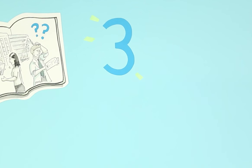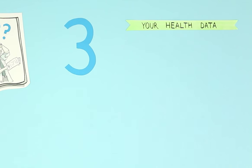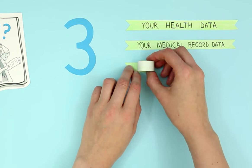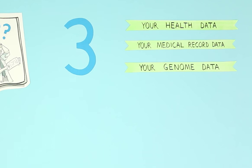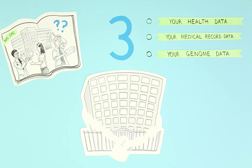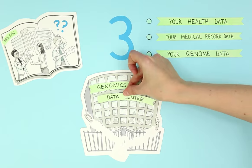And that's where three is a magic number. To really understand, we need to know from medical records what happened to you in the past, and how things turn out for you in the future. We put them all together. Then we put them in the Genomics England data centre.